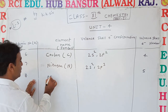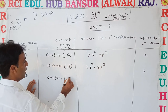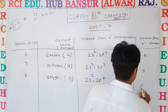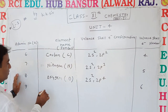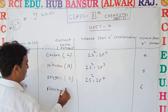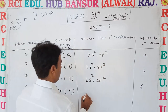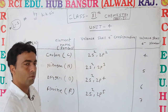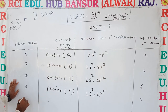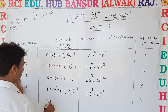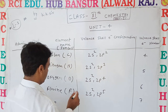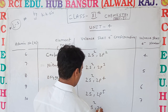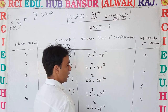Atomic number 8 is Oxygen. Its valence cell electronic configuration is 2s2 2p4, giving 6 valence cell electrons. Atomic number 9 is Fluorine, symbol F. Its valence cell electronic configuration is 2s2 2p5, giving 7 valence cell electrons. Atomic number 10 is Neon, symbol Ne. Its electronic configuration is 2s2 2p6, and it has 8 valence electrons.